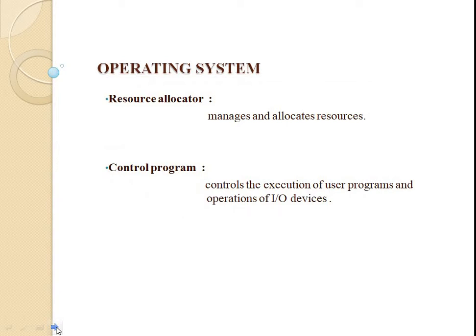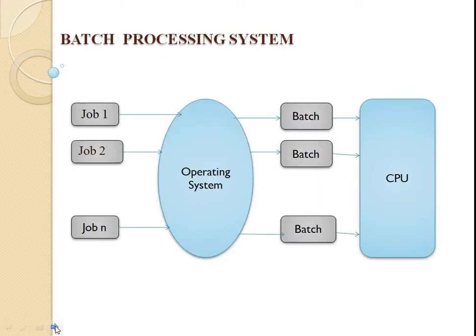The main objective of an operating system is that it acts as a resource allocator and a control programmer. The operating system manages all the resources and allocates them to the corresponding jobs. It also controls the execution of user programs and operations of I/O devices. Operating systems have existed since the very first computer generation and keep evolving with time. In this chapter, we will discuss some of the important types of operating system which are most commonly used.